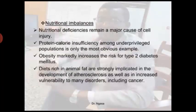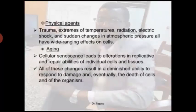Nutritional imbalance remains a major cause of cell injury. Protein-caloric insufficiency among impoverished populations is a prominent example. Obesity markedly increases the risk of type 2 diabetes mellitus, and diets rich in animal fats are implicated in atherosclerosis and increased risk of many disorders including some cancers. Physical agents — including trauma, extremes of temperature, radiation, electric shock, and sudden changes in atmospheric pressure — all have certain effects on cells as stimuli and may lead to cell injury.